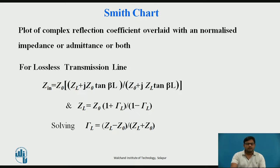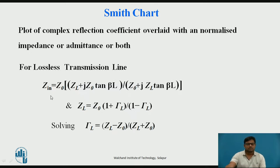For a lossless transmission line, the input impedance equation is: Z_in equals Z_0 times (Z_L + j·Z_0·tan(βl)) divided by (Z_0 + j·Z_L·tan(βl)), where Z_0 is the characteristic impedance, Z_L is the load impedance, and β is the propagation constant. From this equation, the reflection coefficient γ_L is derived as (Z_L − Z_0) divided by (Z_L + Z_0), which is a complex number.